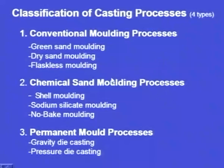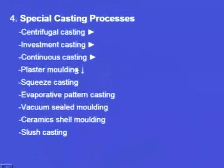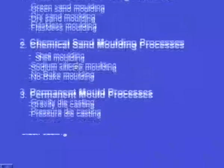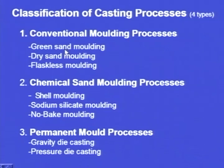We have also seen the classification of the metal casting process. The metal casting process is broadly classified into four types: conventional moulding process, second one chemical sand moulding process, third one permanent mould process, and the fourth one special casting process. The conventional moulding process is divided into green sand moulding, dry sand moulding, and flaskless moulding.